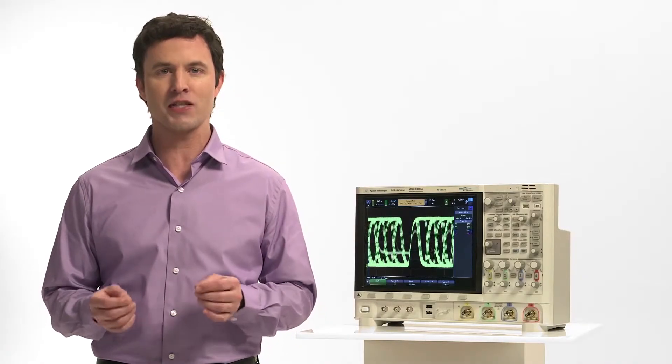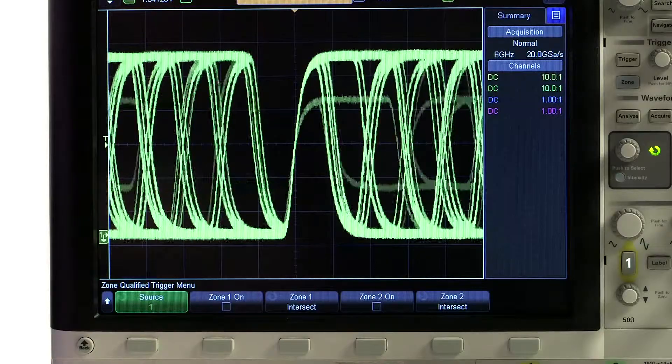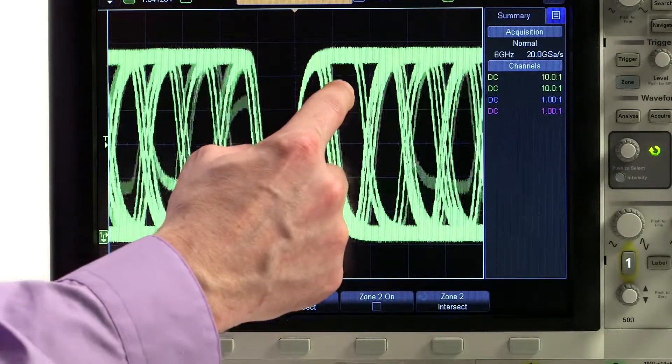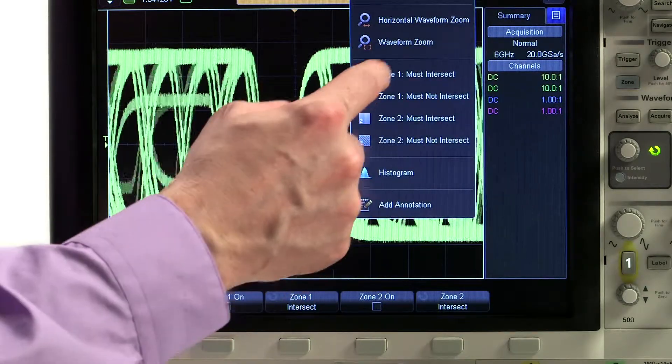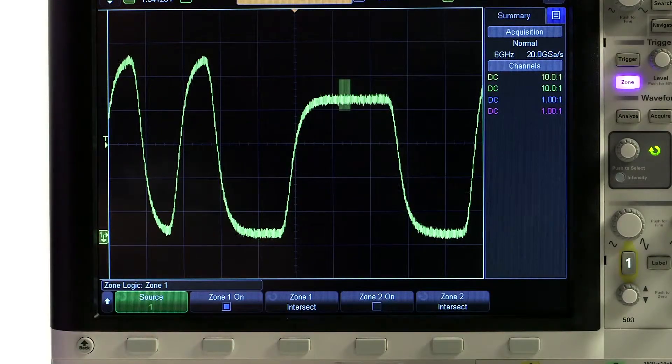And using the InfiniScan zone touch trigger, if you can see it, you can trigger on it. Even complex triggering is now as easy as finding a signal of interest on the screen and drawing a zone box the signal either must pass through or not intersect.